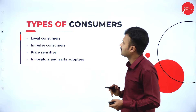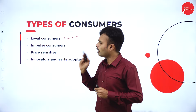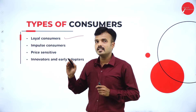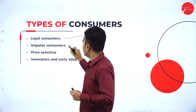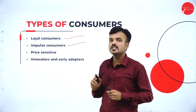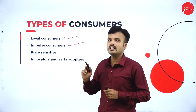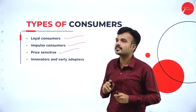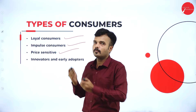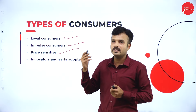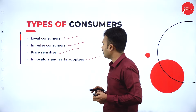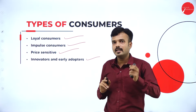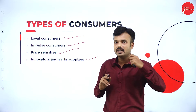Types of consumers: loyal consumers maintain loyalty towards one particular brand and do not change their brand. Impulse customers are spot decision makers who make decisions on the spot to purchase the product — they are discount seekers. Price sensitive customers compare the price of one brand's product against another and purchase what is convenient for their budget. Innovators and early adopters, as the name suggests, are the first to purchase a product and may have only theoretical knowledge about it.